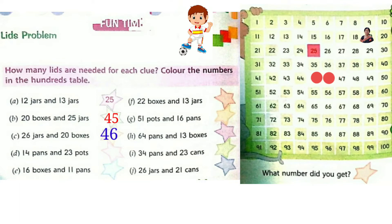Now question D: 14 pans and 23 pots. In the 1's place: 4 and 3, 4 plus 3 is 7. And in the 10's place: 1 and 2, 1 plus 2 is 3. So the answer is 37. Colour 37 in the 100's table.